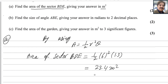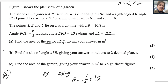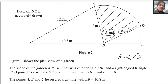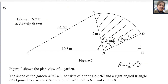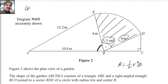For question number 5, second part: find the size of angle ABE, giving your answer in radians to two decimal places. We need to find angle ABE. We can apply the law of cosines to find this angle. The formula is: cosine(angle ABE) equals the square of the adjacent sides...